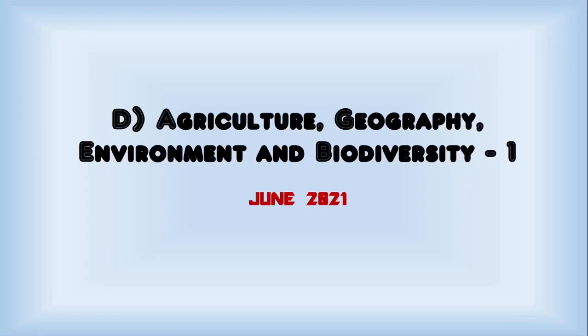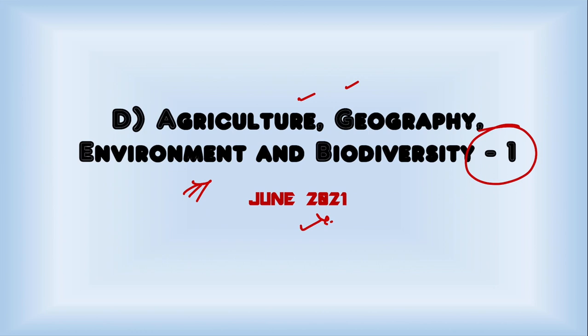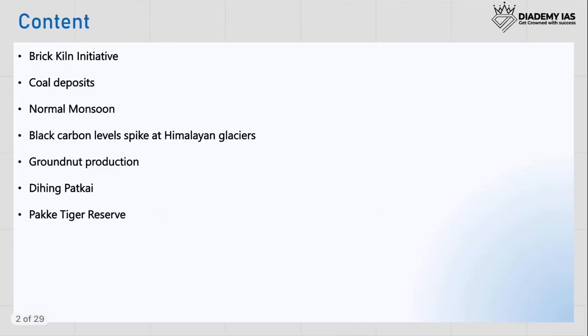Hello friends, welcome to Diatomy. Welcome to the discussion on June 2021 current affairs. In this lecture we will discuss agriculture, geography, environment and biodiversity — this is part one. These are short videos which you can use to revise the current affairs. The document we are using for the discussion is the monthly current affairs document provided to you. Whenever you are free, just go through these videos once.